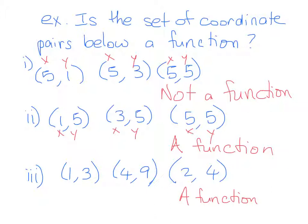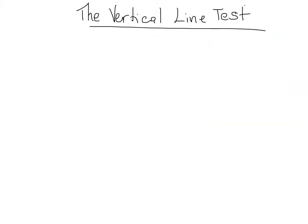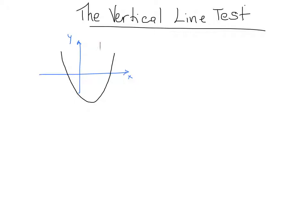Now let's look at a graph and see how to use a visual to figure out whether something is a function. There's something called the vertical line test. For example, if I have a parabola in a coordinate plane — this is my x-axis, this is my y-axis, and the black curve is my graph — if I draw a vertical line anywhere in the plane and it touches the graph only once, it is a function. Drawing a vertical line here, it hits the graph only once, so this parabola is in fact a function.